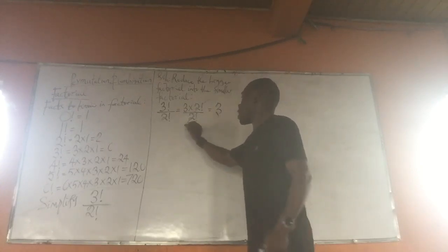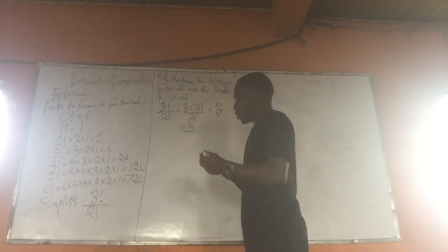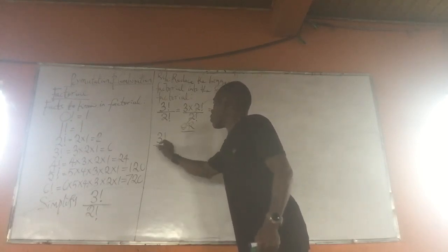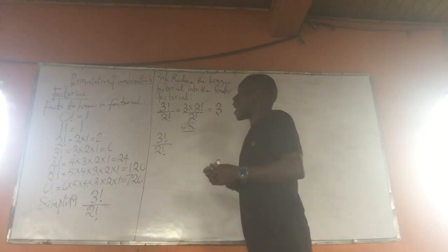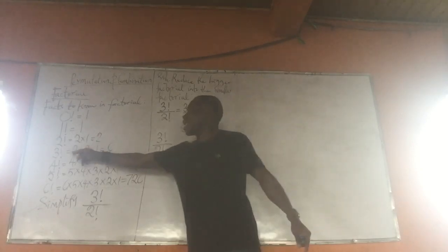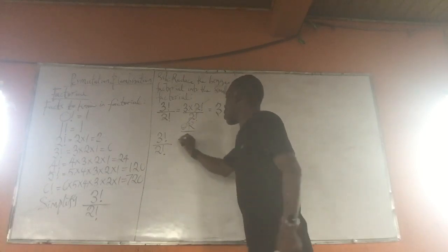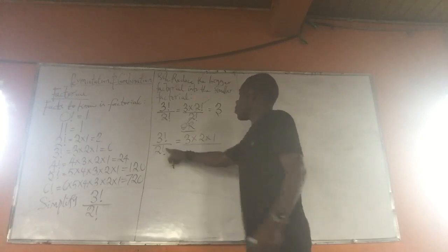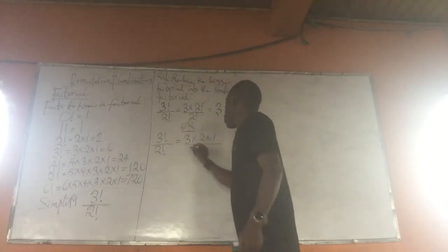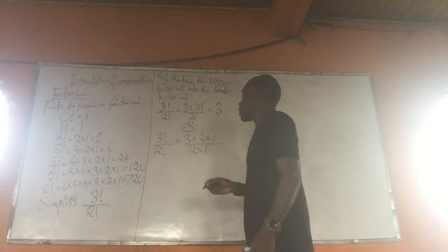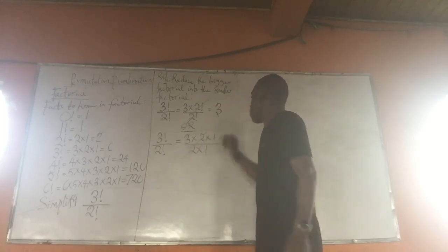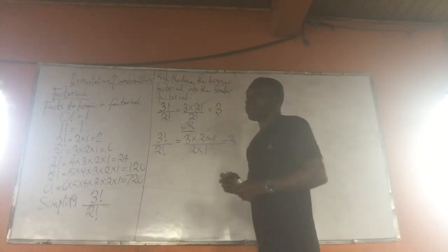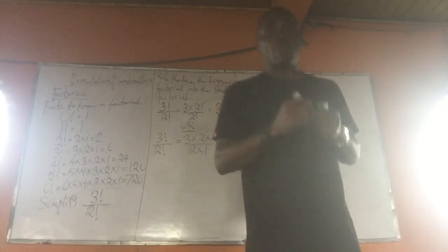Now if we don't want to use this method, we can expand it all. We have 3 Factorial over 2 Factorial, which becomes 3 times 2 times 1 over 2 times 1. The 2 here cancels the 2 there, and the 1 here cancels the 1 there, and what is left is 3.